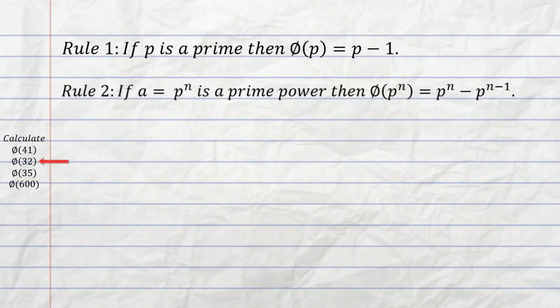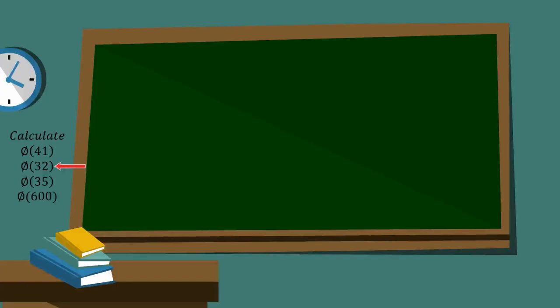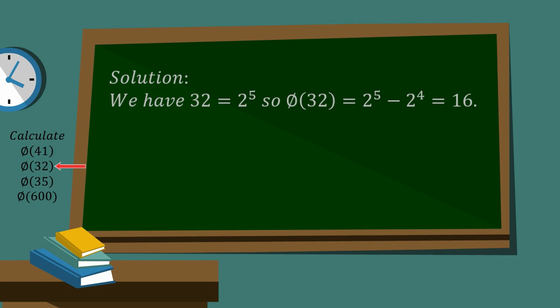So you might think about that later and you'll probably get comfortable with this rule. And we can use that now for phi of 32, because 32 is a prime power. So here's a solution. We have 32 equals 2 to the 5, so phi of 32 equals 2 to the 5 minus 2 to the 4 equals 16.